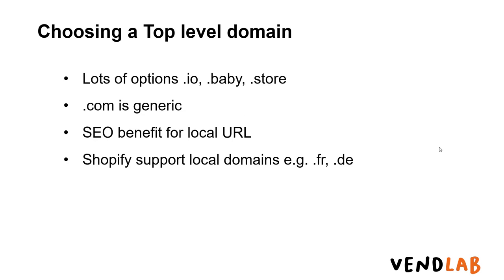So what should you be looking for when you're choosing a top-level domain? There are now lots of different options to choose from. Popular options include .io, .baby, .store. However, .com is still the most generic and popular option that people go for.